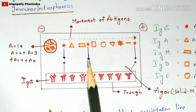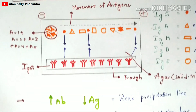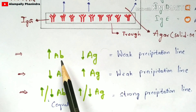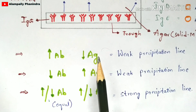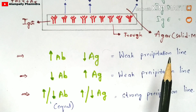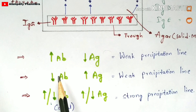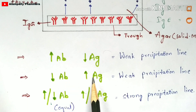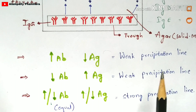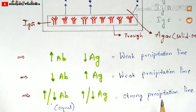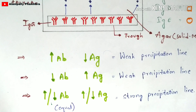One important concept: if the antibody concentration is more and the antigen concentration is less, only a weak precipitation line can be seen. Similarly, if the antibody concentration is less and the antigen concentration is more, the precipitation line will also be weak. A strong precipitation line is formed only when the antigen concentration and the antibody concentration are equal.